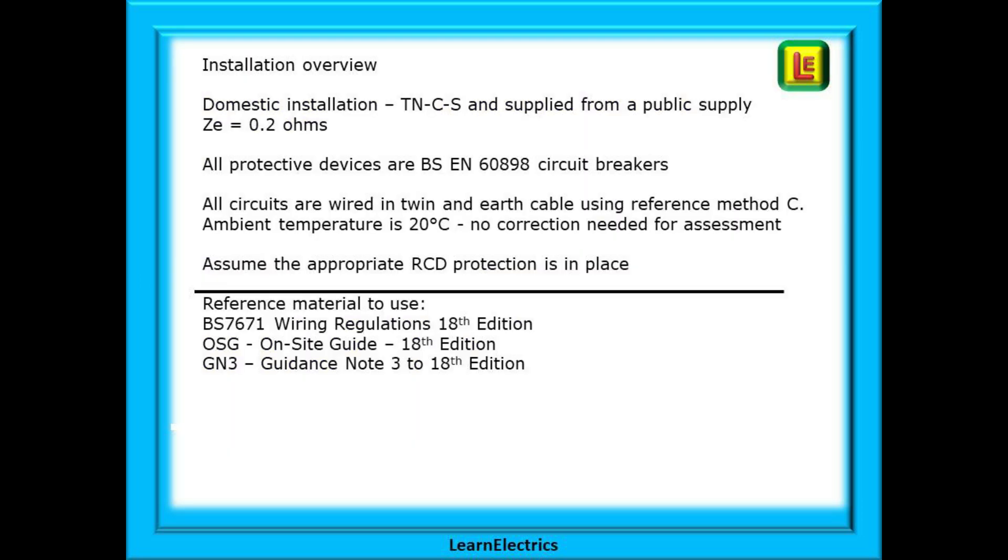We have a domestic installation and the earthing system is TNCS and it is supplied from a public low-voltage supply, in other words, the national grid. You are given that ZE is 0.2 ohms and all protective devices are BS EN 60898 circuit breakers.